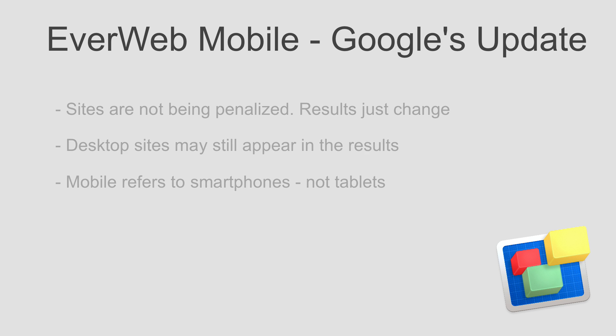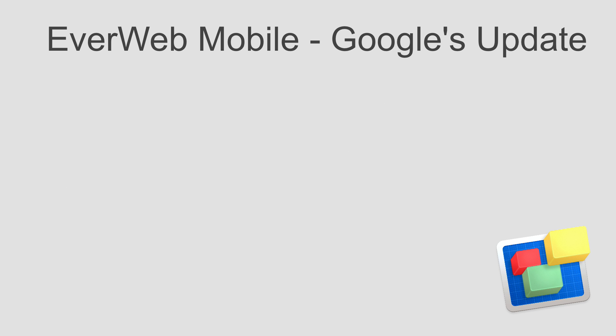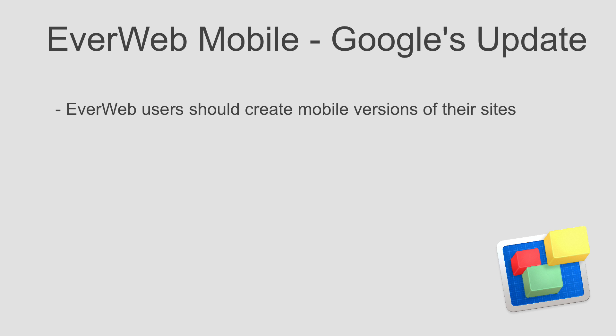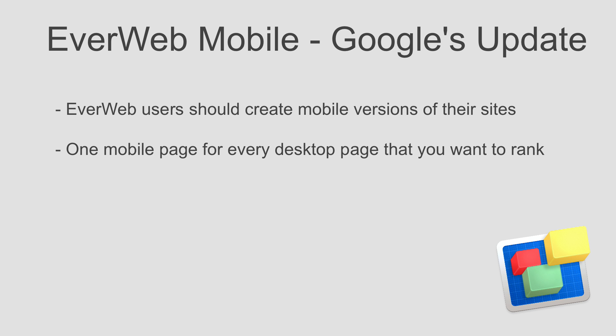So what do EverWeb users who are concerned with mobile search need to do in order to make sure their site is still appearing in Google for users searching on a mobile device? The first thing that you should do is create a mobile version of your website. What this entails is creating a mobile page for each desktop page on your site that you want to rank during a mobile search.